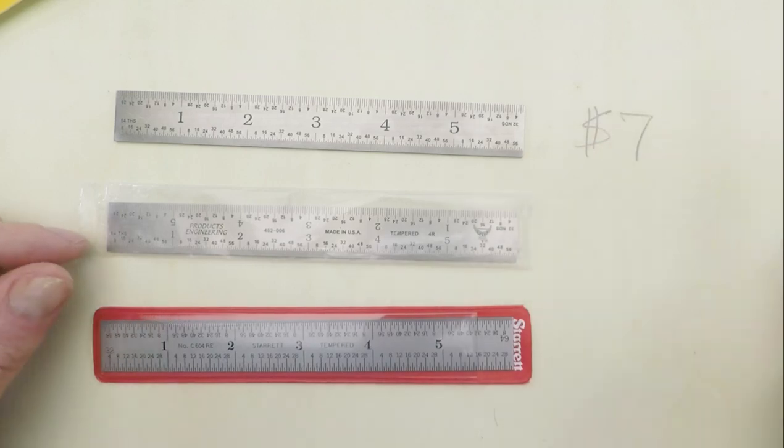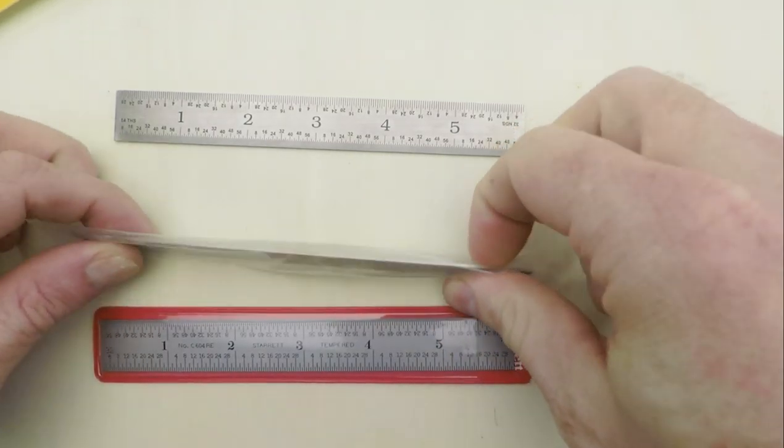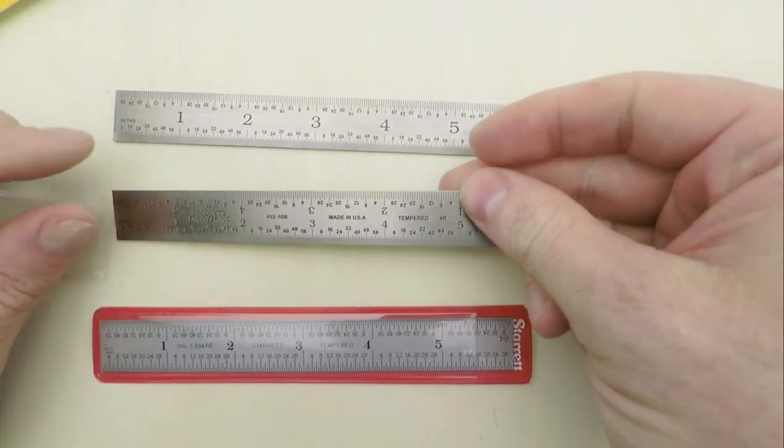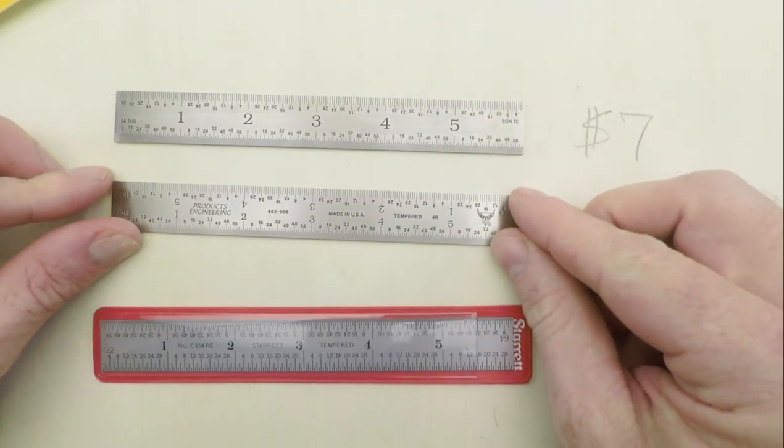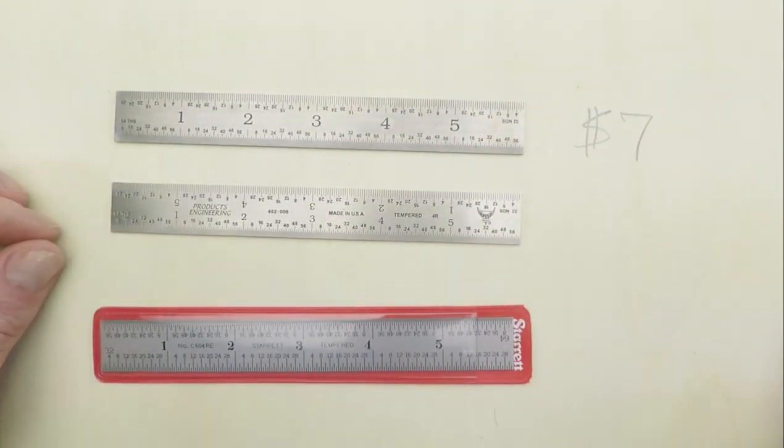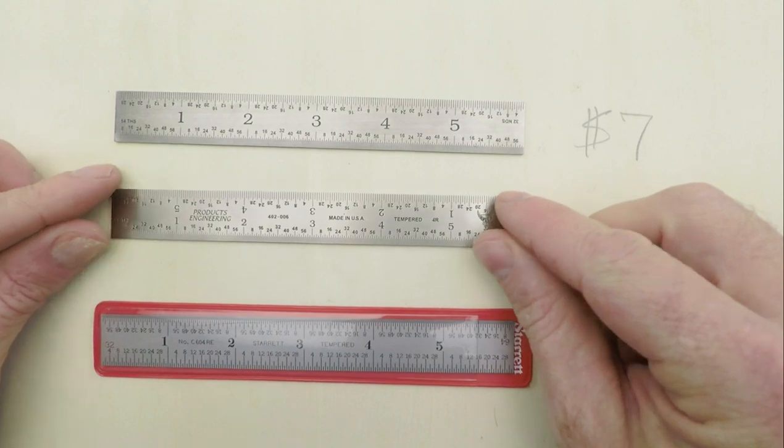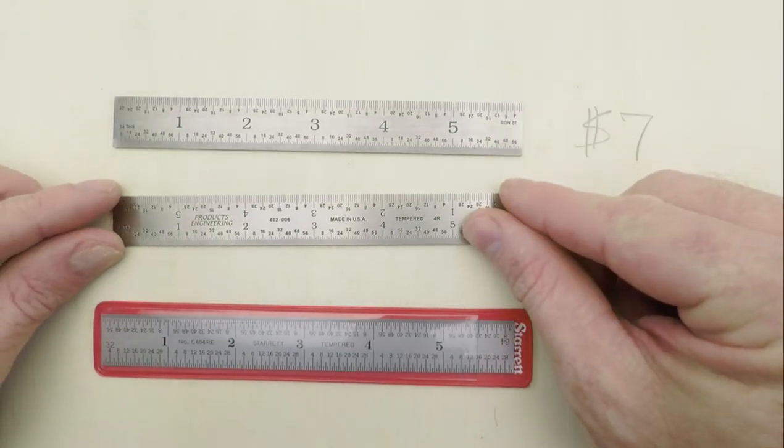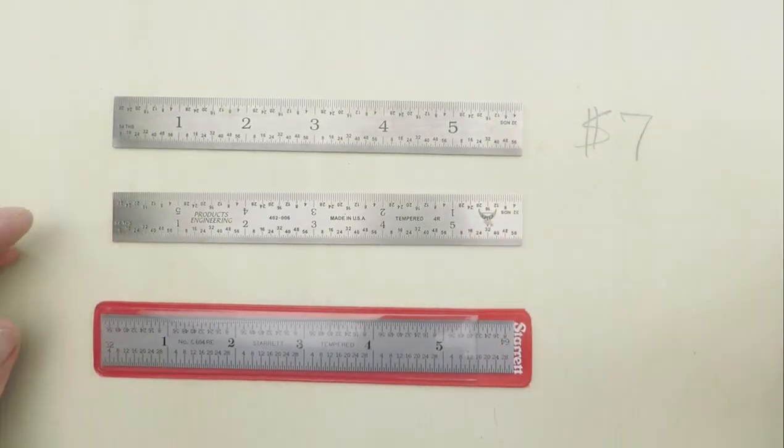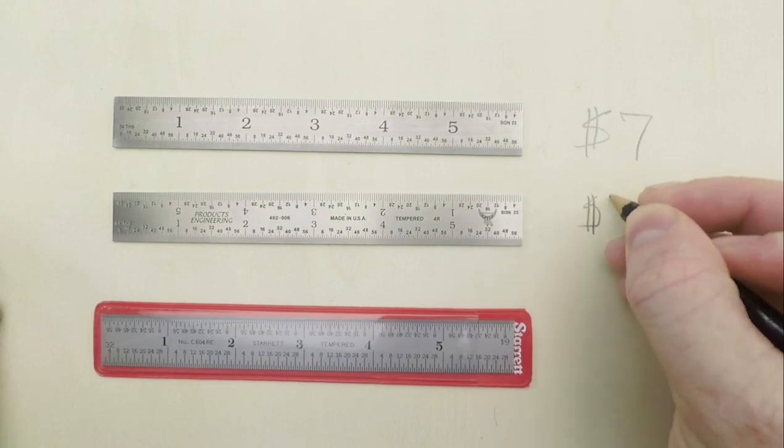In the middle price range, there's this Model 402-006 from Products Engineering Corporation of Torrance, California, also known as PEC. It's made of a higher-quality stainless that's been tempered and given a brushed finish. That's twice as much as the generic import tool, 14 bucks if you buy from Amazon.